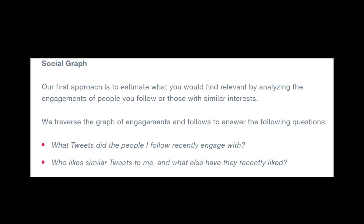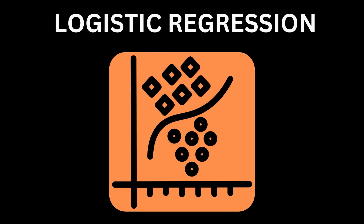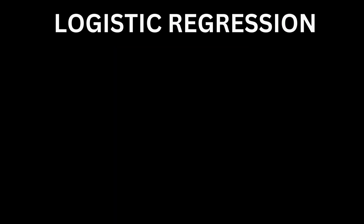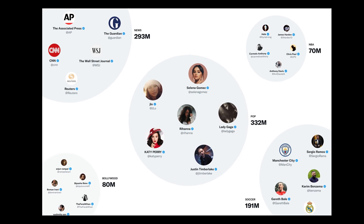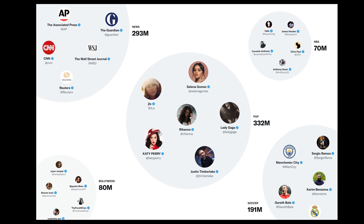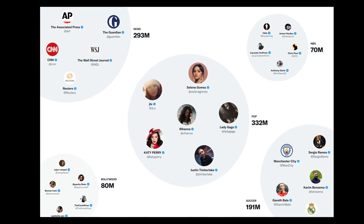The second source is out-of-network tweets. For these, it will see what tweets the people you follow engaged with and who likes similar tweets like you do. Once all of this is done, the candidate sources are ranked using logistic regression. A lot of people might be interested in the same kinds of things, so Twitter uses an algorithm to cluster these types of people into one community and show them the same kinds of tweets.